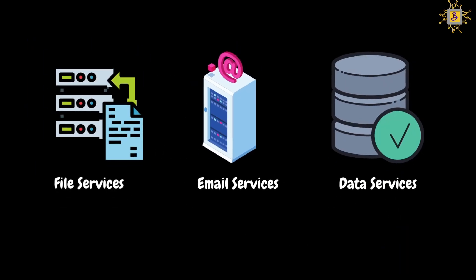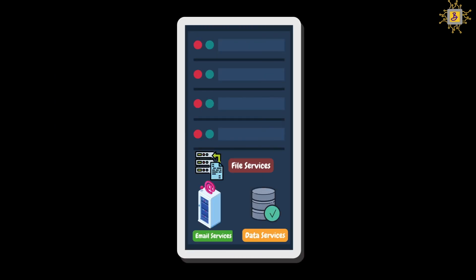A server could be dedicated to handle one of the services. For example, one server for managing file services, one server for email services, and another server for data services. We can see this kind of setup in larger organizations — they generally dedicate one server for a specific service. We can also set up one server to handle all the services, and this type of setup can be found in smaller companies, where the same server can provide file services, email services, and data services.